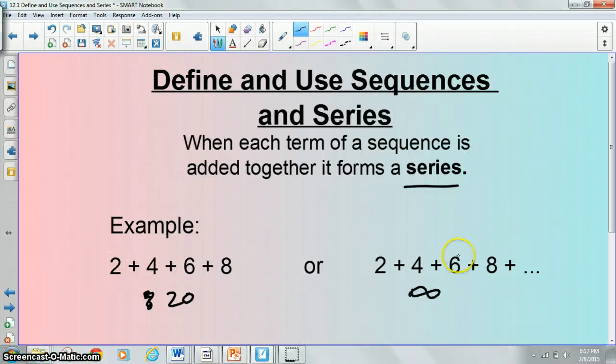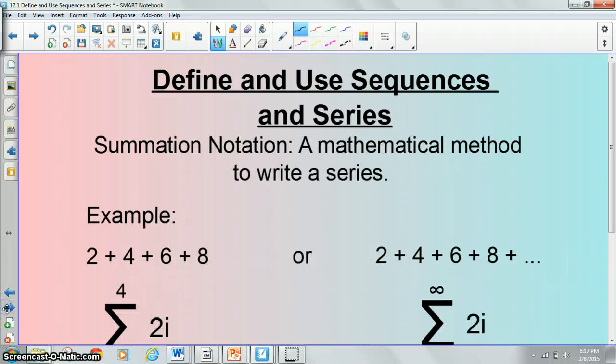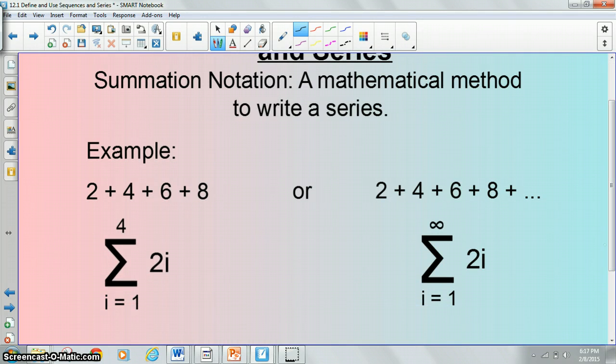And then the sum of this one would be infinite because it goes on forever. The second, another type of homework question, I think this is the second type in order for your homework. It's something called summation notation. This is a mathematical method or a mathematical notation to write series. Go ahead and write this whole slide down. If you need to pause, you might because I am kind of on a time crunch here. I get cut off at 15 minutes.